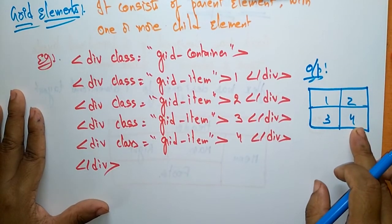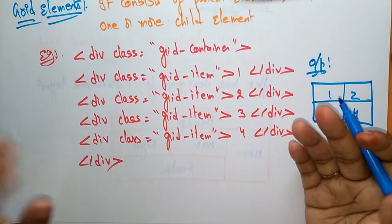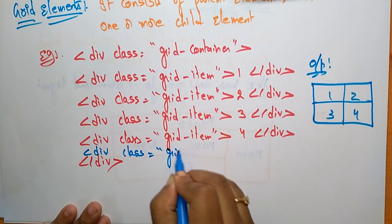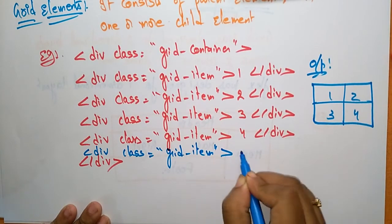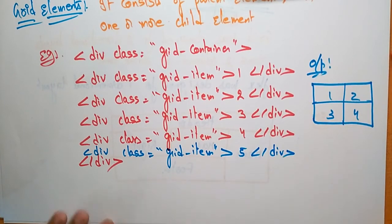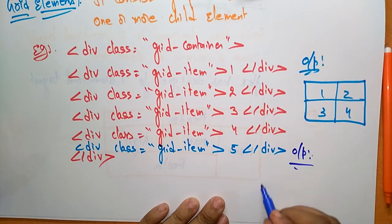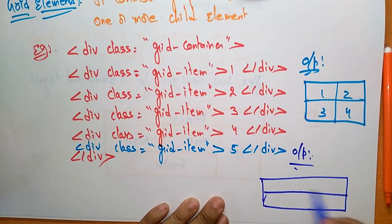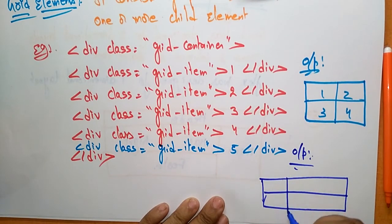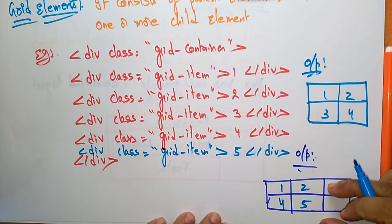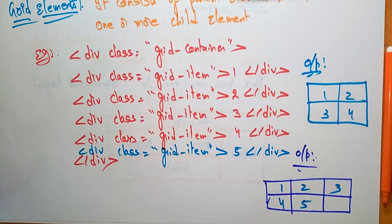Let me insert one more element — div class 'grid-item' with item five. So now what will be the output? It takes three columns and is filled with one, two, three, four, five. The grid will be arranged like this — based on items increasing, the columns will be increased as well.